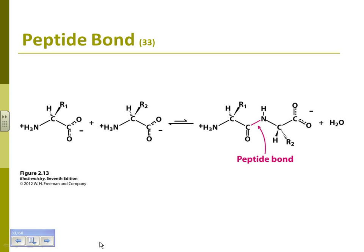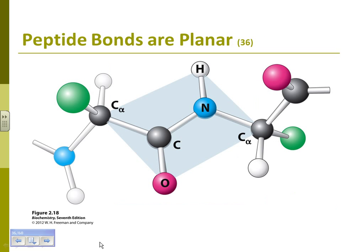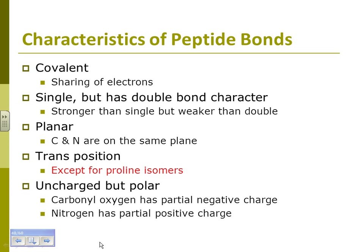Amino acids are held together by peptide bonds. Memorize everything on slide 40 — the characteristics of peptide bonds. Very important; it comes up all the time.